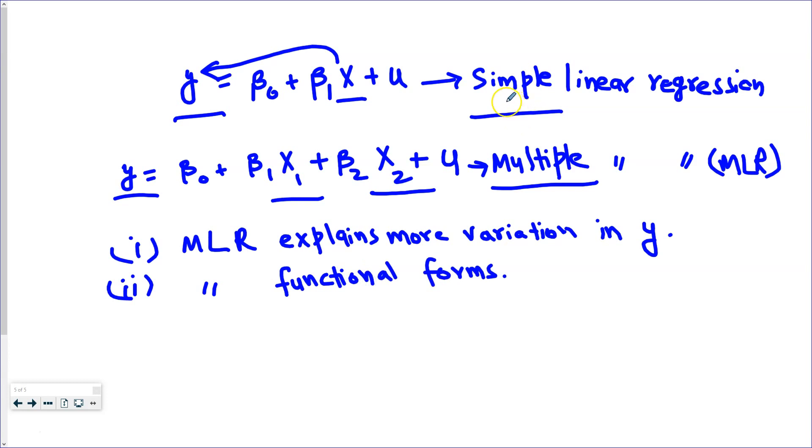In the simple linear regression model case, we are dealing only with a simple case where x was entering in this form linearly. But we'll see that this multiple linear regression model is more flexible because x can enter in other functional forms as well. For example, x could be entered in level as well as in the square form as we will see in the future.